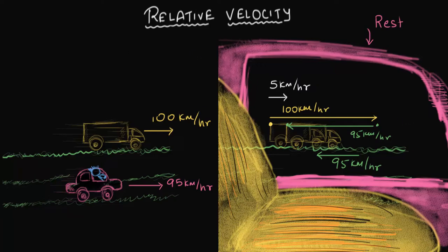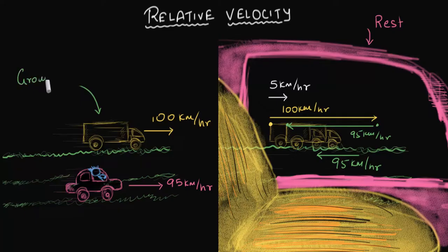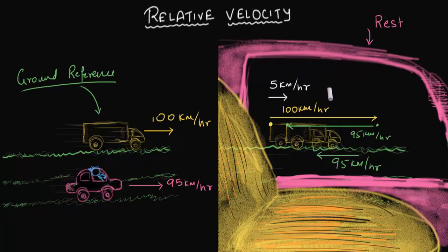Velocity is a relative term. A technical term people use when talking about relative velocity is reference frame. So instead of saying the velocity of the truck as measured by someone standing on the ground, we say the velocity of the truck from the ground reference frame is 100 kilometers per hour. And similarly, the velocity of the truck from the car reference frame is 5 kilometers per hour.